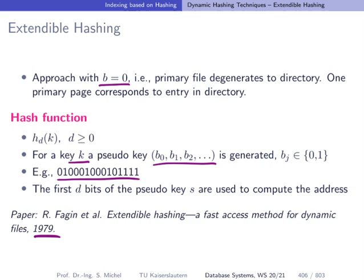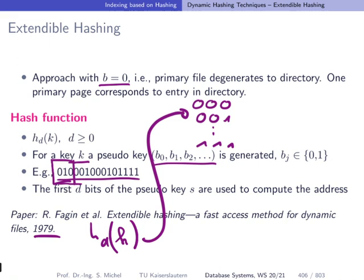And now what we do, we just consider the first d bits, and this is our address of the data record or the key. So the idea here is, if you're doing this and you're looking at the first three bits here, then you have a directory consisting of 000, 001, and so on until 111. So we have eight entries in our directory, and if there's a key k and we apply this hash function, then this points us to one of these entries in the directory. And then we can use the right directory pointer to the location where this data object with a certain key is located in the secondary file on disk.